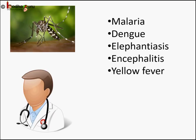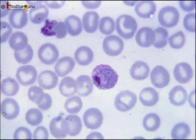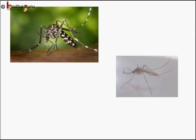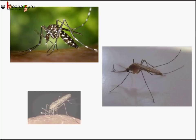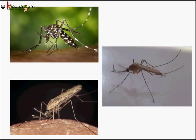The diseases that mosquitoes spread are caused by microscopic living things, which means they are so small that we cannot see these organisms through the naked eye. Examples of such microscopic organisms are bacteria, virus, protozoa, worm, etc. Different mosquitoes transmit different diseases, so a small mosquito can be deadly.